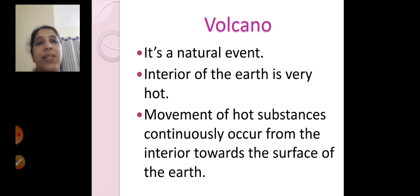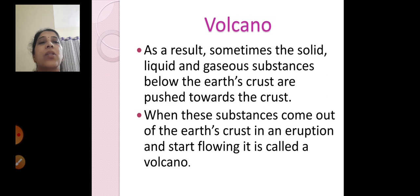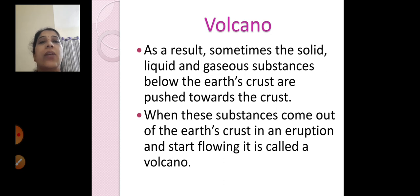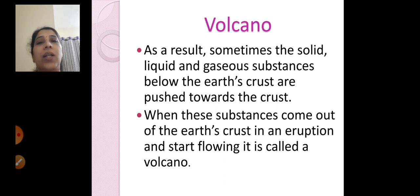As a result, sometimes the solid, liquid and gaseous substances below the earth's crust are pushed towards the crust. When these substances come out of the earth's crust in an eruption and start flowing, that is called a volcano.